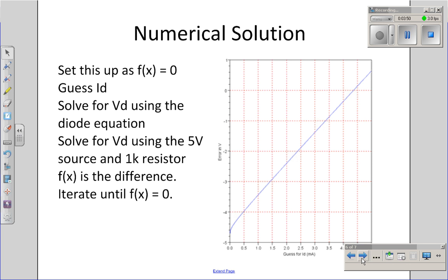On the right, you see the difference in the two currents based upon the current that you guess. Your solution will be right here. When the function equals zero, when the current, based upon the voltage and resistor, is equal to the current as computed by the diode.